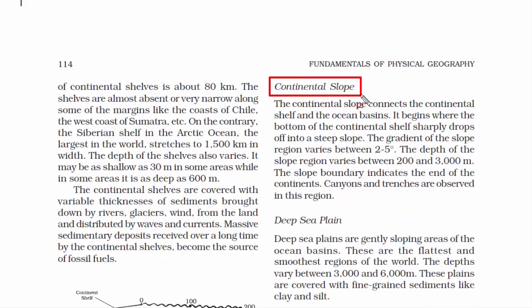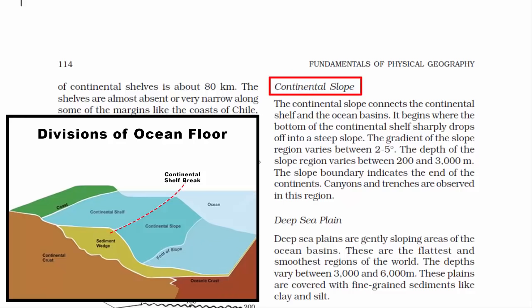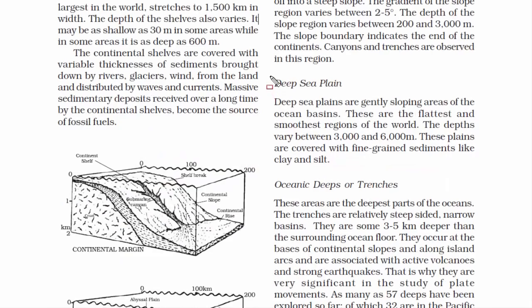The second division is the continental slope. At the point where the continental shelf breaks, the shelf ends at a very steep slope — this is the continental slope. It connects the continental shelf with the ocean bed. The gradient of the slope region varies between 2 to 5 degrees, and depth varies between 200 and 3,000 meters. The slope boundary marks the end of the continental crust and the beginning of oceanic crust, and many canyons and trenches are found in this region.